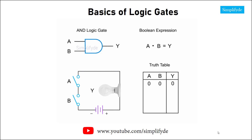When B is closed, or high, its value in the truth table is 1, and A is open, or low, its value in the truth table is 0. Thus, Y, or the output, is 0, or low, and the bulb still does not light. Likewise, when A is closed, or high, and its value in the truth table is 1, and B is open, or low, and its value in the truth table is 0, then Y, or the output, is also 0, or low, and the bulb does not light.